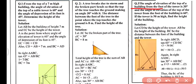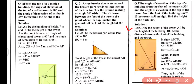AB is the building and CD is the tower. From the foot of the tower (point C), the angle of elevation to the top of the building (point A) is 30°. From the foot of the building (point B), the angle of elevation to the top of the tower (point D) is 60°. BC is the distance between the tower and building. In right-angle triangle BCD, tan60° = CD/BC, so √3 = 50/BC, giving BC = 50/√3 meters.